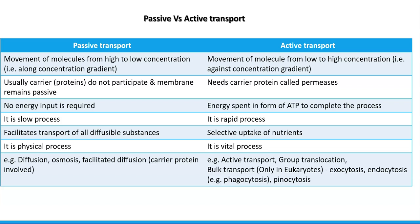Passive transport, being energy-independent, is a very slow process, whereas active transport is rapid. Passive transport facilitates transport of all diffusible substances, whereas active transport is commonly involved in selective uptake of nutrients required for metabolic processes. Passive transport is a vital process for the life of the organism.